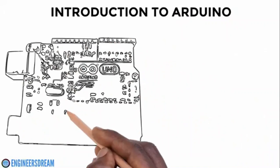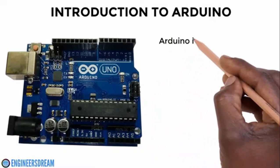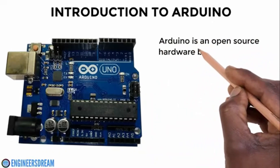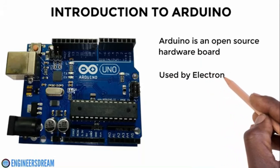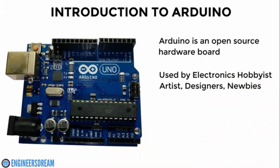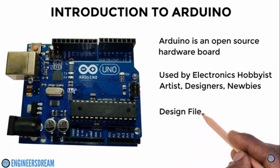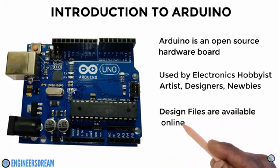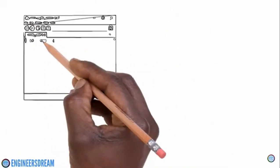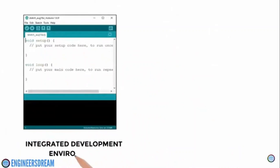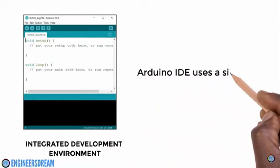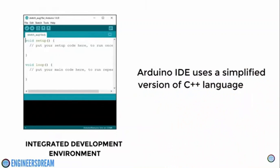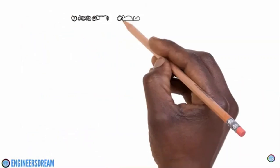In this video I'll explain the basics of Arduino microcontroller as we will use it for our programs. Arduino is an open source hardware board which is used by electronic hobbyists, artists, designers and even electronic newbies for building projects related to electronics. Since it is an open source hardware board, the design files of Arduino are made publicly available online by its developers. The Arduino IDE — that is, integrated development environment — uses a simplified version of C++, thus making it easier to learn programming.